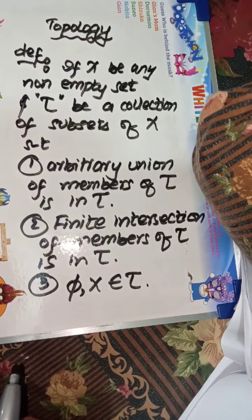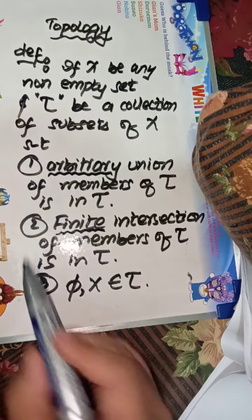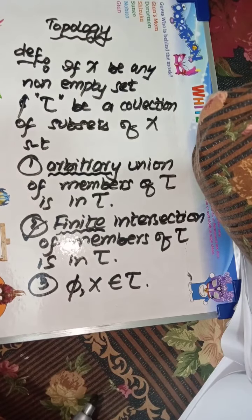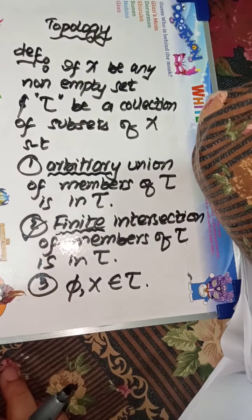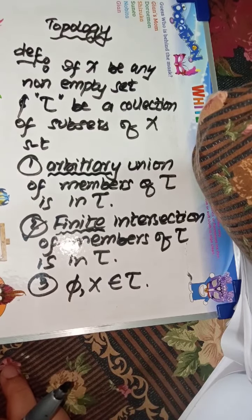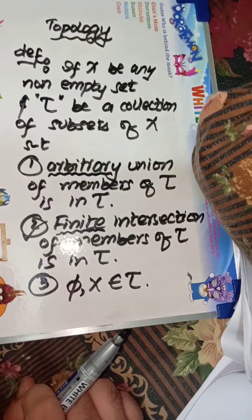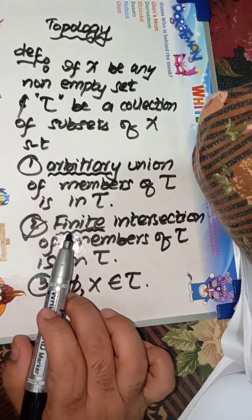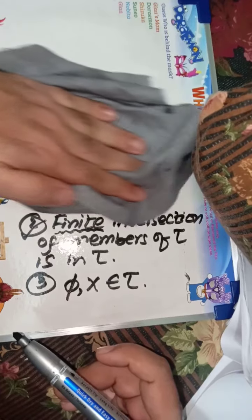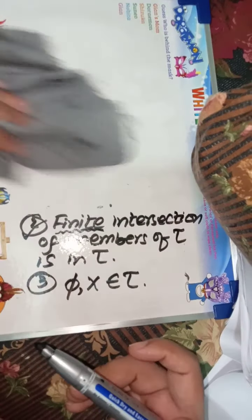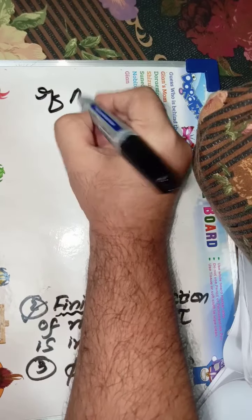This is the basic definition of topology. The above points contain something which should be discussed today. First, I want to discuss the finite intersection of members of tau being in tau. Why should we use the word 'finite' instead of 'arbitrary' here? Can't we use 'arbitrary' instead of 'finite'? I want to discuss the reason behind this.